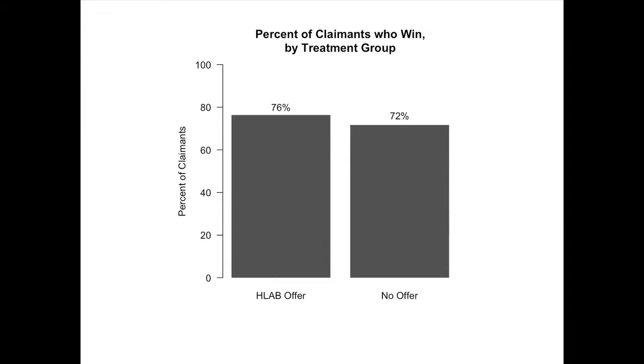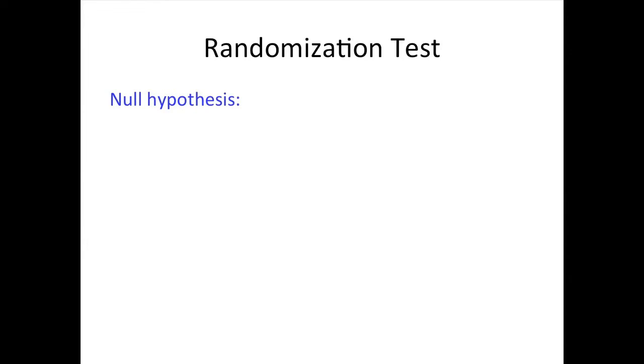We're going to use a hypothesis test to assess that — specifically, what's called a randomization test. In a randomization test, the null hypothesis is that the distribution of outcomes is the same in the two groups. In other words, it doesn't matter which group you're in; the outcomes are going to be the same either way. We'll talk more about these sorts of null hypotheses as we move forward.